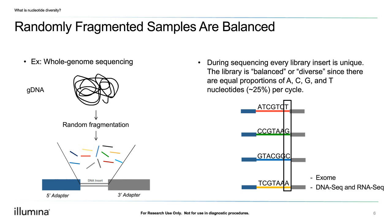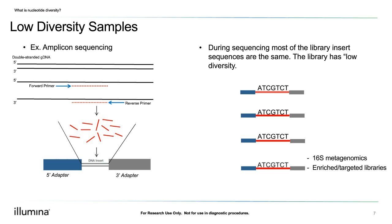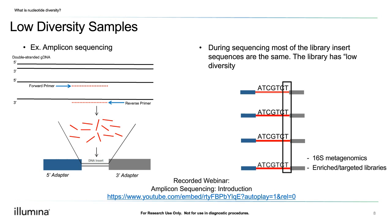Other examples of diverse libraries can include exome capture libraries or many DNA-seq or RNA-seq libraries. Low diversity samples are typically derived from a specific subset of the genome, often through PCR amplification of specific regions of interest. This means that many of our clusters will derive from fragments with the same or highly similar sequences. Common examples of low diversity libraries include 16S metagenomics libraries or targeted libraries. If you'd like more information on preparing and sequencing amplicon libraries, we have a recorded webinar linked below.